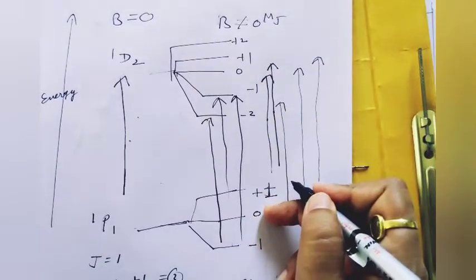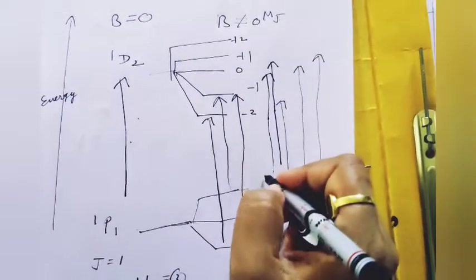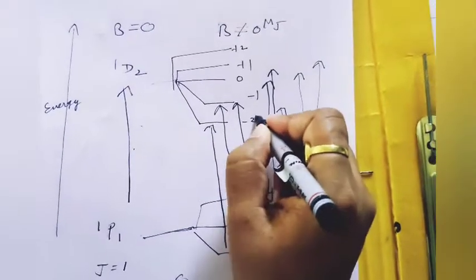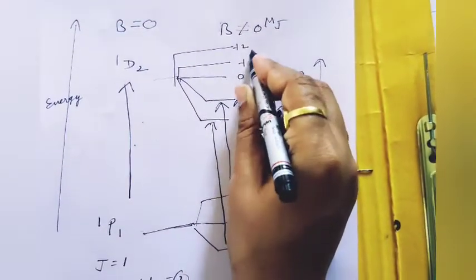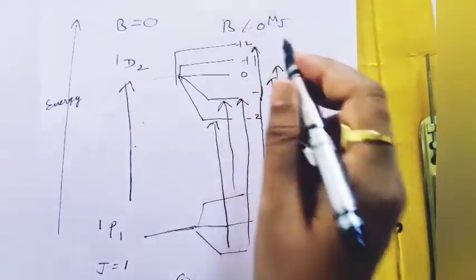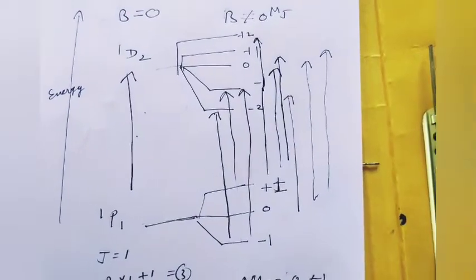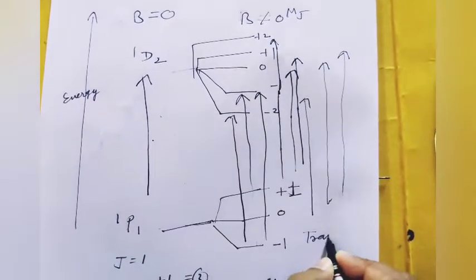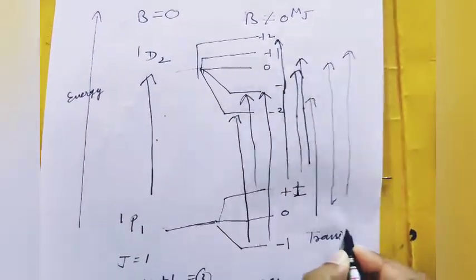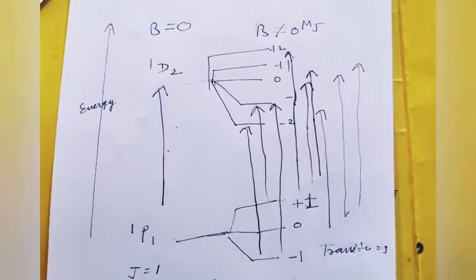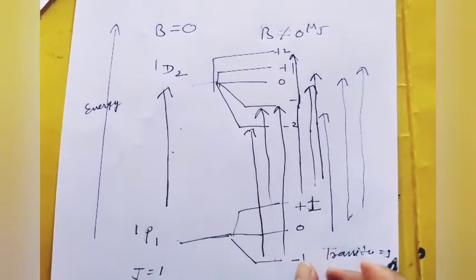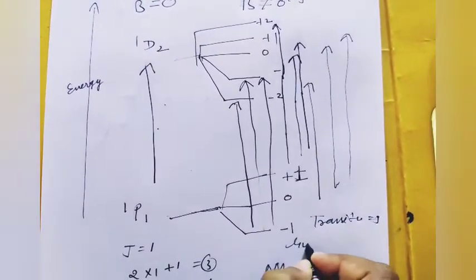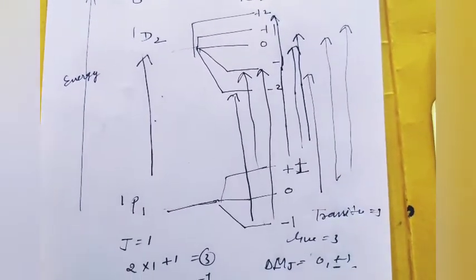Applying the selection rule, the allowed transitions total 9. However, because 3 transitions have the same energy difference, they each produce 1 line, giving a total of 3 spectral lines.